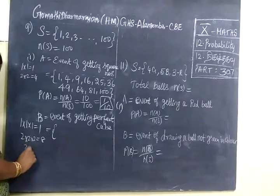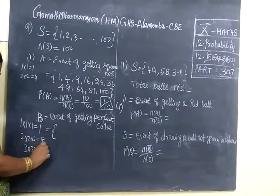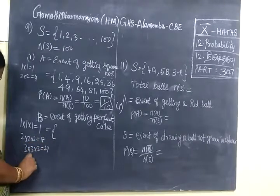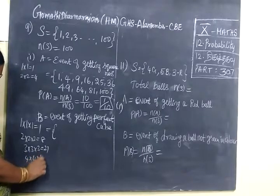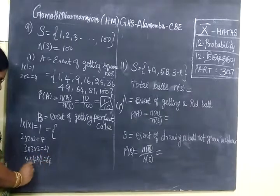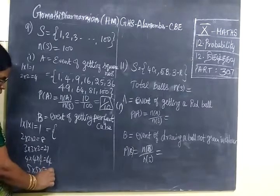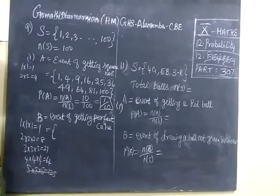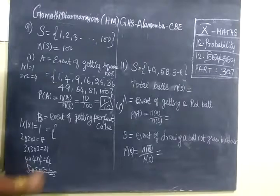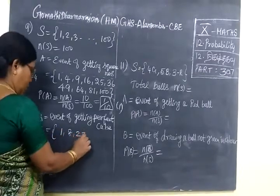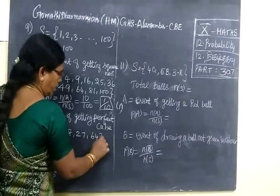Perfect cube means cube number, 3 times. 1 into 1 into 1 equals 1, 2 into 2 into 2 equals 8, 3 into 3 into 3 equals 27, 4 into 4 into 4 equals 64. 5 into 5 into 5 we can't select because it is 125, more than 100. So we are selecting 1, 8, 27, 64.